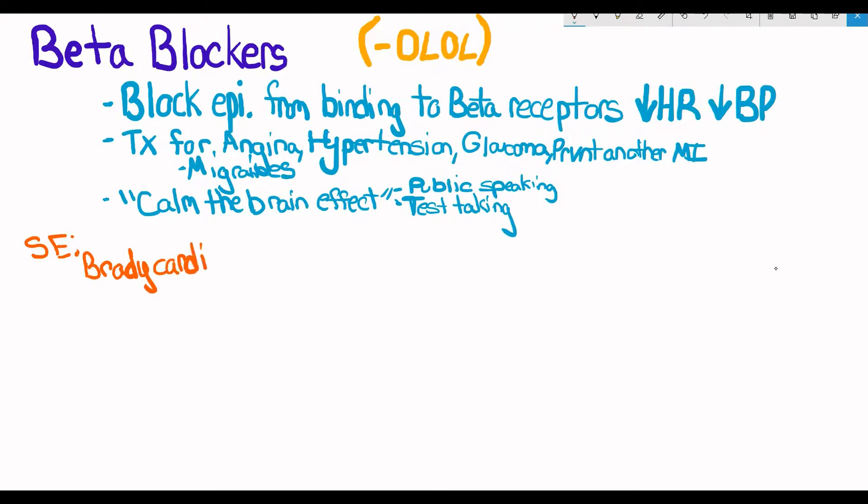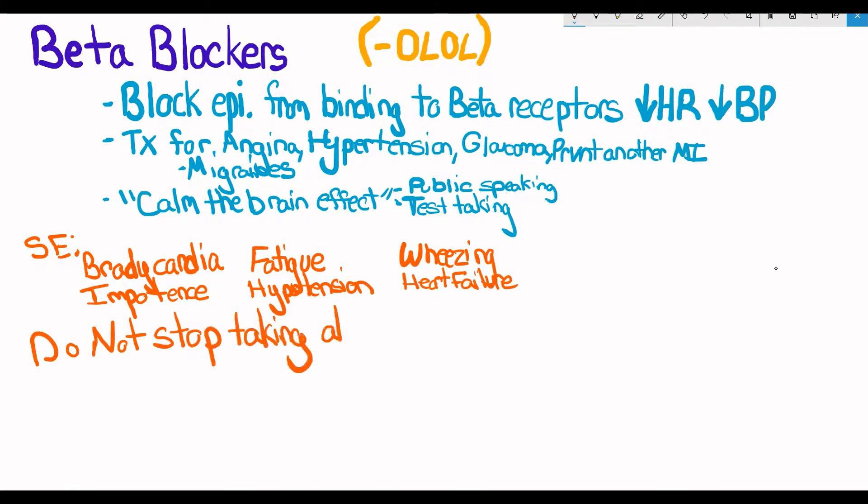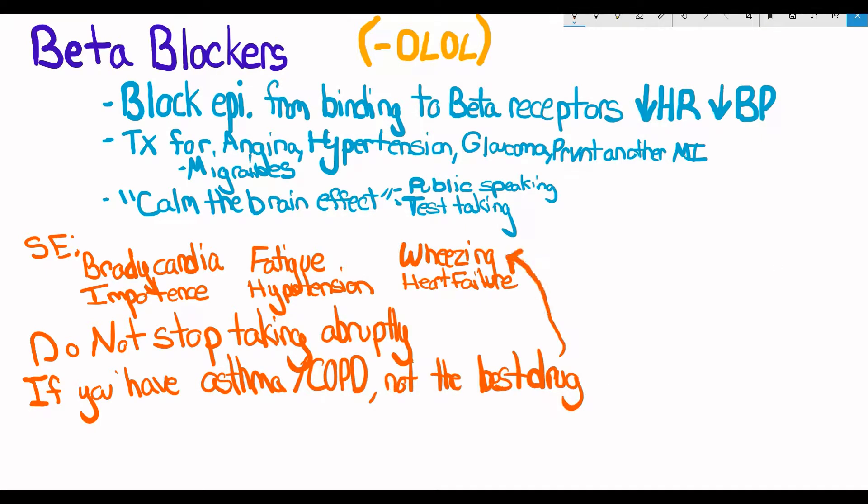Some side effects include bradycardia, so slow heart rate, impotence, fatigue, hypotension, wheezing, and heart failure, which means that the heart is unable to pump enough blood to meet the body's demands. One important thing to know is that you cannot stop taking this abruptly. Even if you have asthma or COPD, they're usually not recommended because one of the side effects is wheezing. It happens because you have beta receptors also on your lungs. Those ones are beta 2 receptors. You have beta 1 receptors on your heart. And the drug isn't that selective, so it'll block the sympathetic innervation on the lungs as well, causing your bronchioles to constrict and limiting your air flow, causing wheezing.